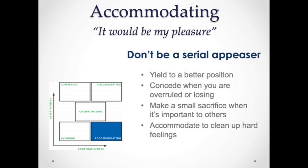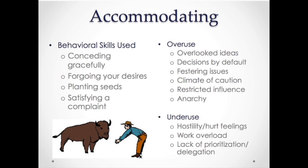The final mode of handling conflict is the accommodating style, which could be characterized as 'it would be my pleasure.' There is a caution here not to be a serial appeaser. However, this style can be helpful when yielding to a better position, conceding when you're overruled or losing, making a small sacrifice when it's something very important to others, or accommodating to clean up hard feelings. Behavioral skills include conceding gracefully, forgoing your own desires, planting seeds for a future decision, or satisfying a complaint. Overuse can lead to overlooked ideas, decisions by default, festering issues, a climate of caution, restricted influence, and in some cases, anarchy. Underuse could lead to hostility and hurt feelings, work overload, or a lack of prioritization and delegation.